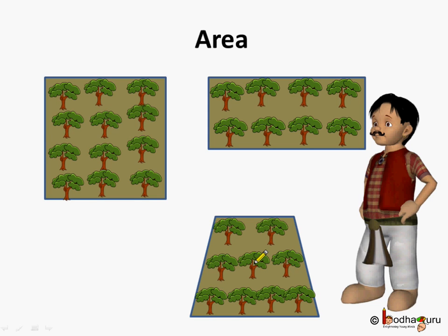First let us revise. What is an area? It is the size of the shape. Or in other words, it is the region bounded by the shape. Here we can say the area of each shape is the colored region filled with the trees.